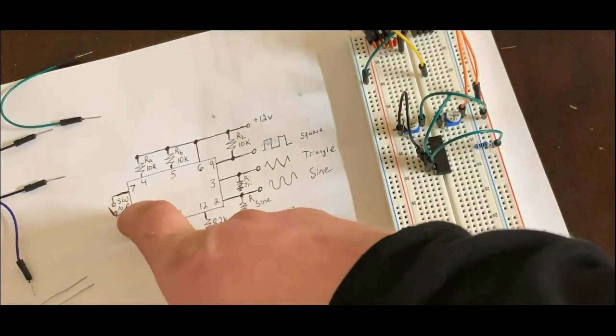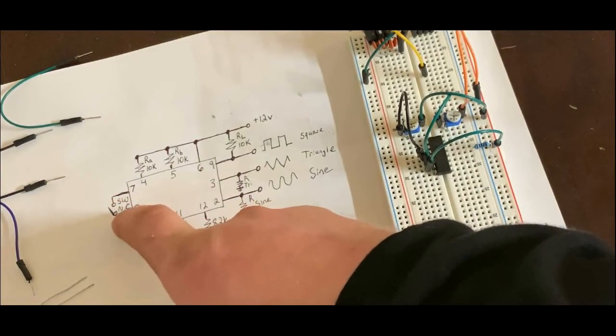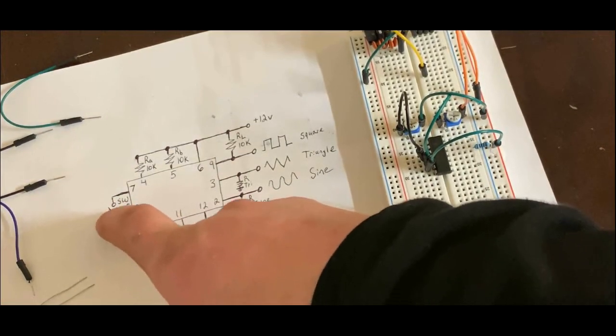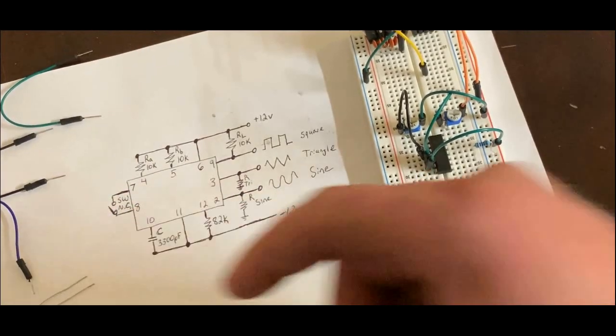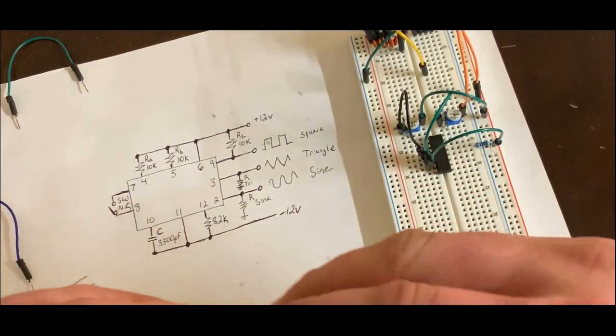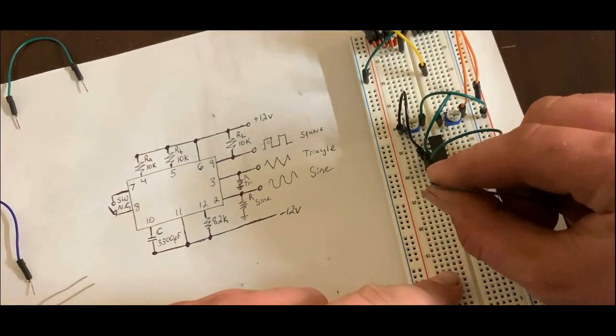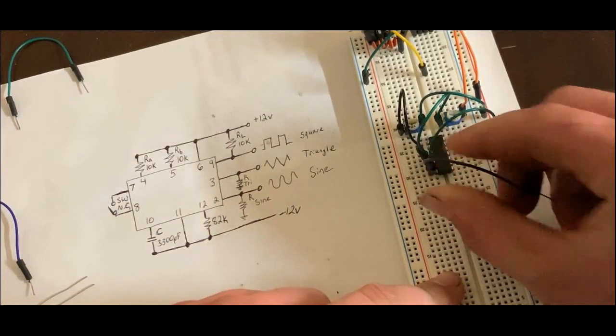Then, the next two, 7 and 8, is just a switch on this schematic. And basically, if it's a closed switch, it turns the circuit on. If it's open switch, it turns it off. So, I'm going to just connect pins 7 and 8 together. This way, it's always on.